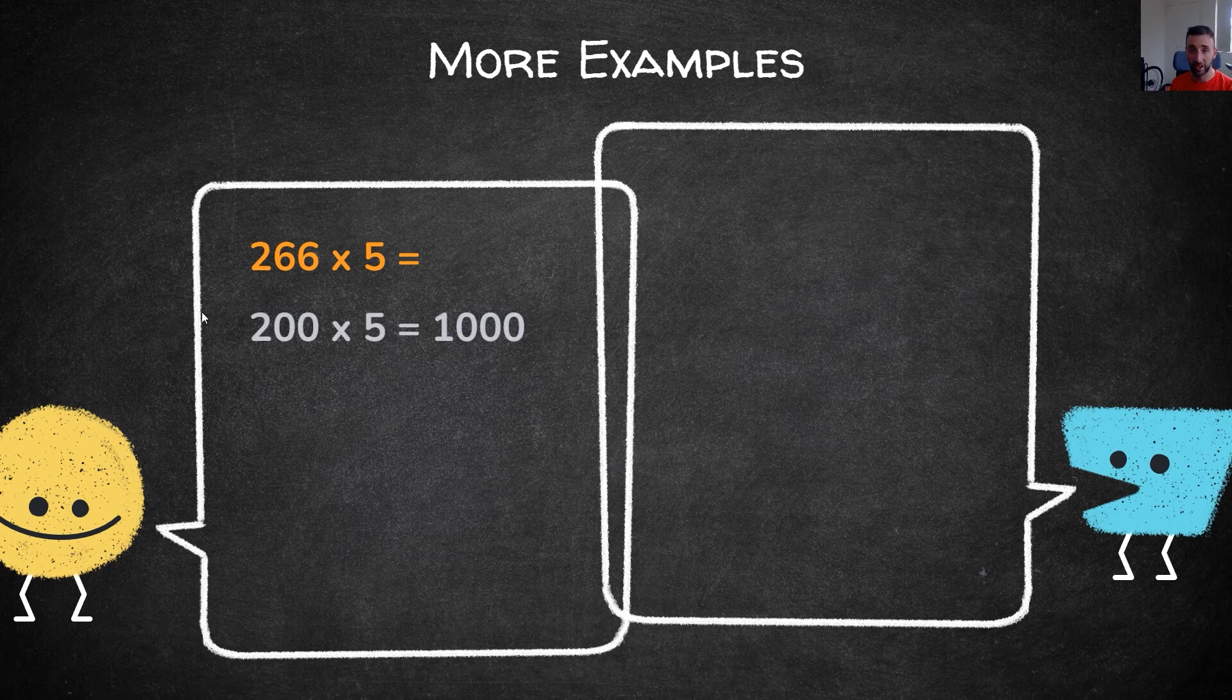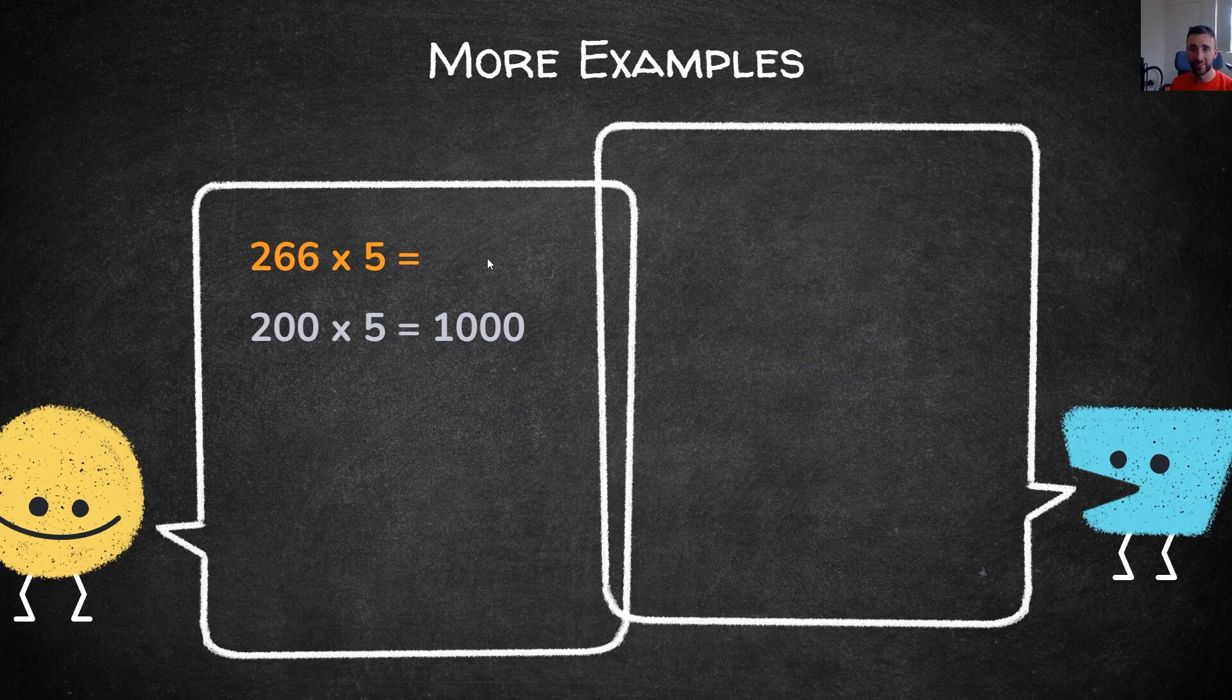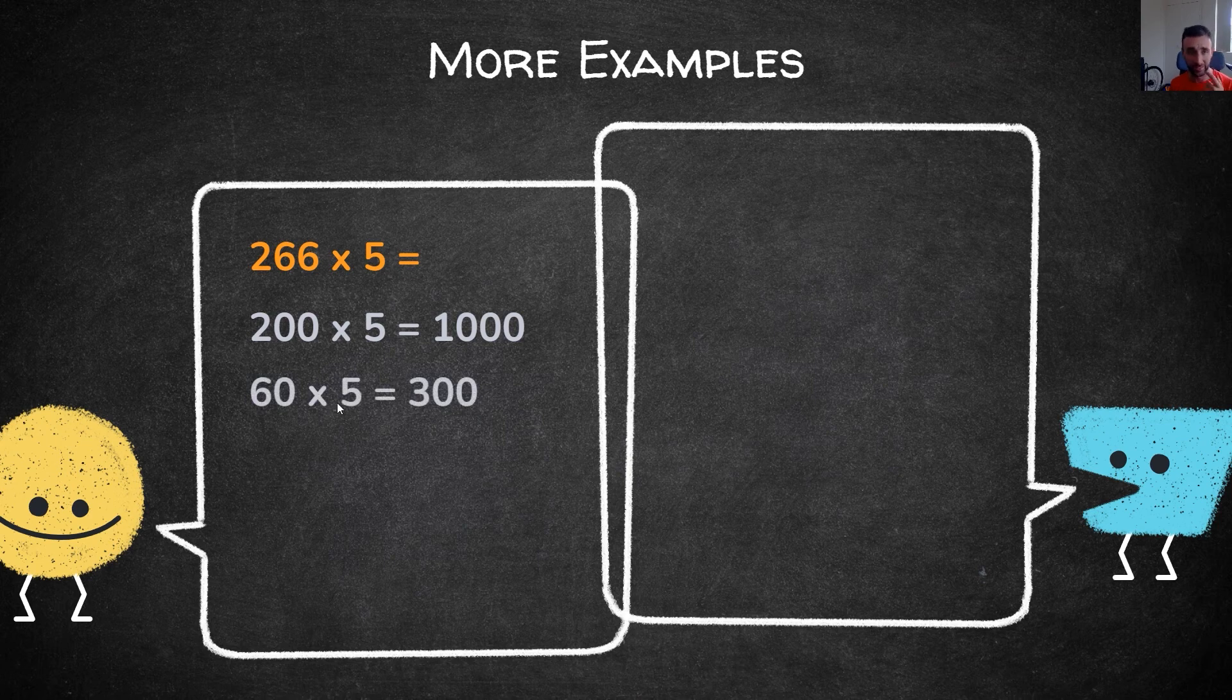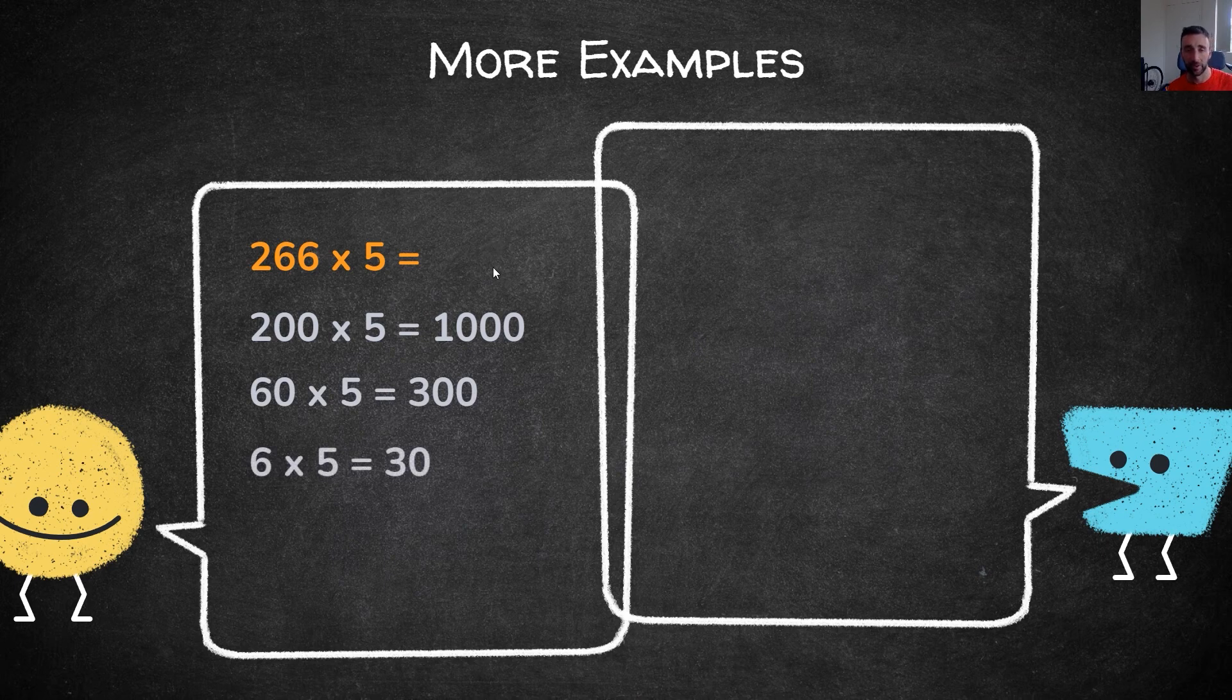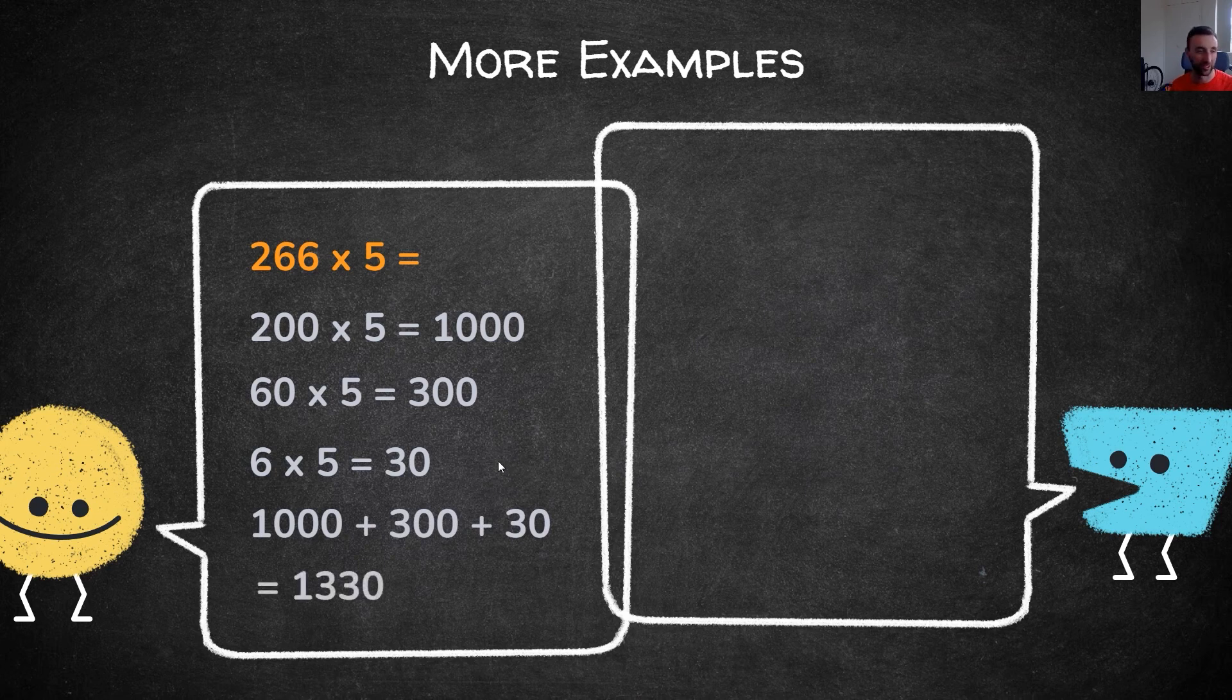With our hundreds we have 200 multiplied by 5, which gives us 1000. Then our tens, 60 multiplied by 5 is 300. Last one, 6 multiplied by 5 equals 30. Add those three numbers up and that gives us 1330 for our answer for the first example here.